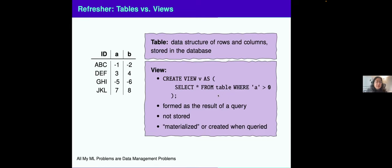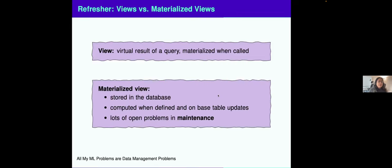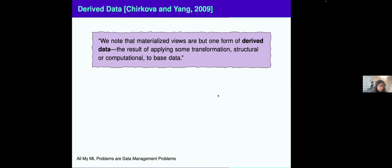The question becomes, what is materialized views even mean? Materialized views are stored in the database. And they're computed when you initially define that view and on base updates to the table. So every time I add a row to the new table, then I recompute my view. There's a ton of open problems or open questions in materialized view maintenance.